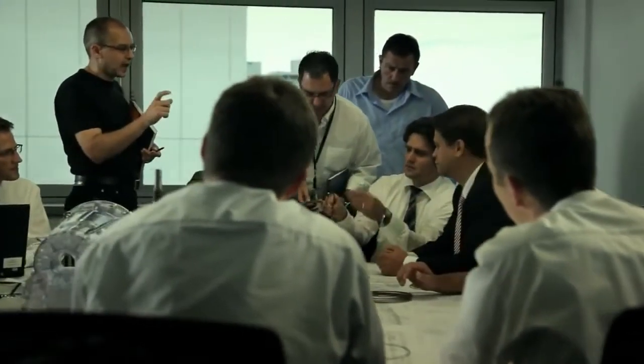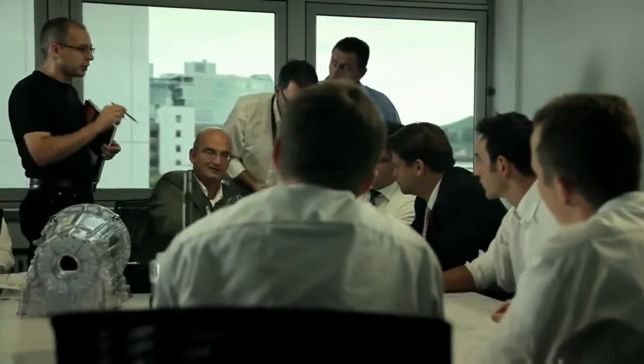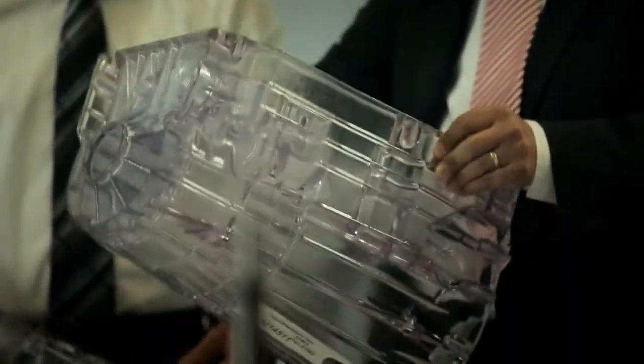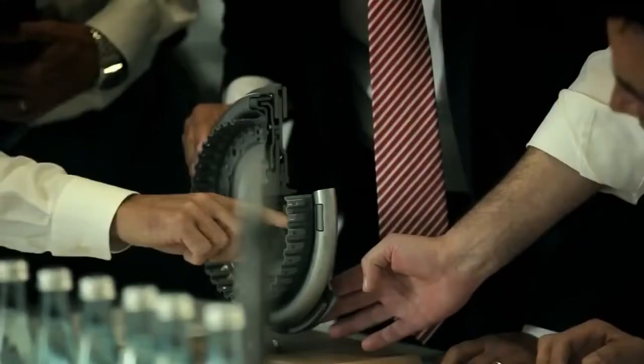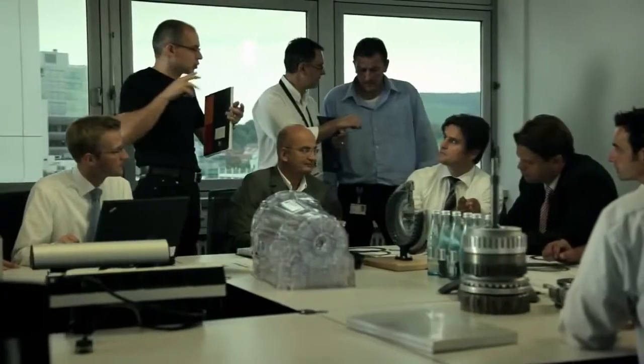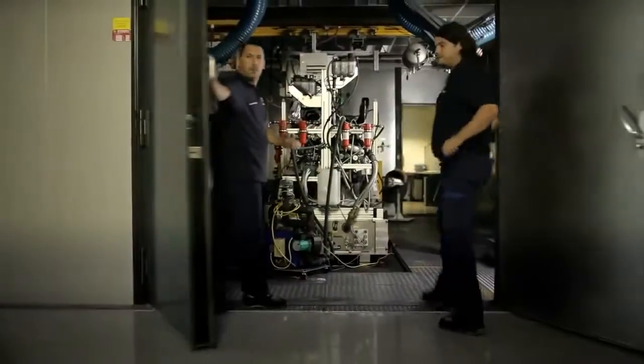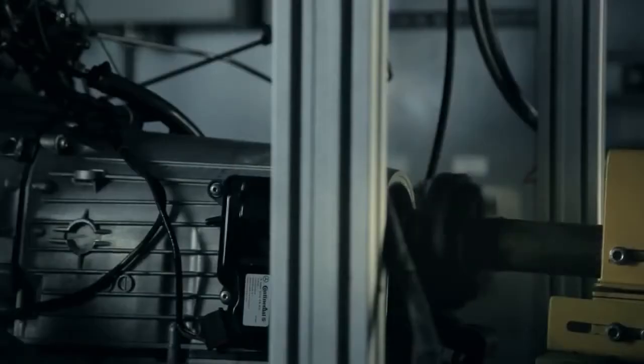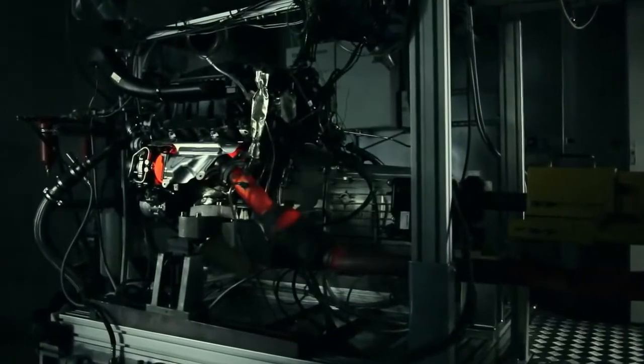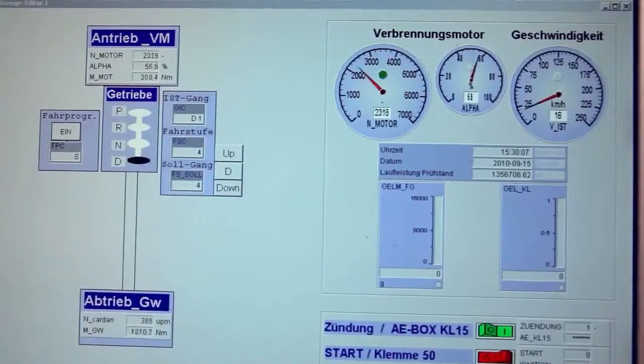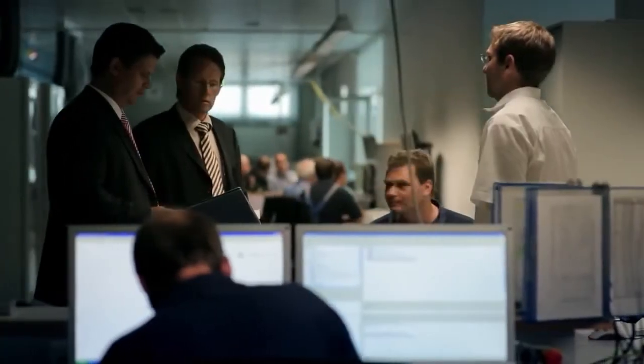The Mercedes-Benz engineers worked on the evolution of the 7G Tronic for three years. A highly motivated team reworked the transmission one part at a time. Countless test runs were carried out on the prototypes under the most severe of operating conditions, which allowed for a detailed further improvement of the transmission.